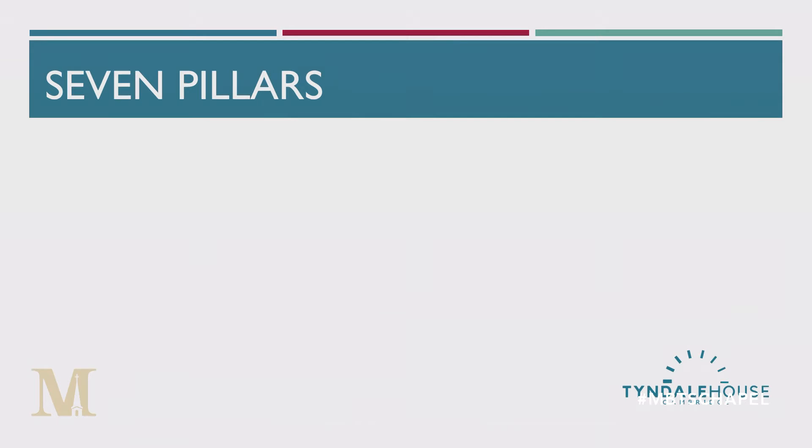Seven pillars of a doctrine of scripture — why seven? Well, seven's a great number, but when we define a doctrine of scripture it's not just defined by one particular thing. You could have far more than seven pillars. The first is that words come from God — verbal inspiration. Secondly, words are true. Thirdly, relevant. Fourthly, sufficient. Fifthly, clear. Sixthly, preserved. And seventhly, historical.